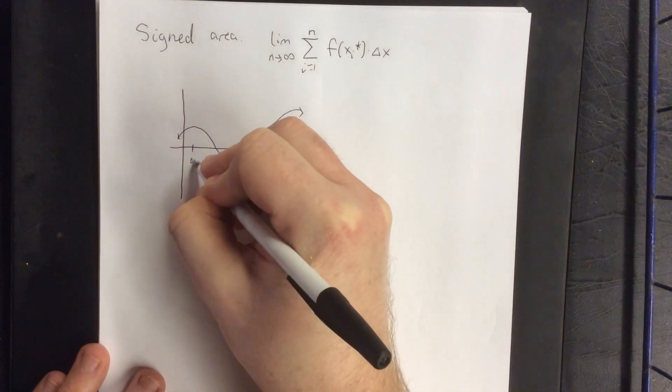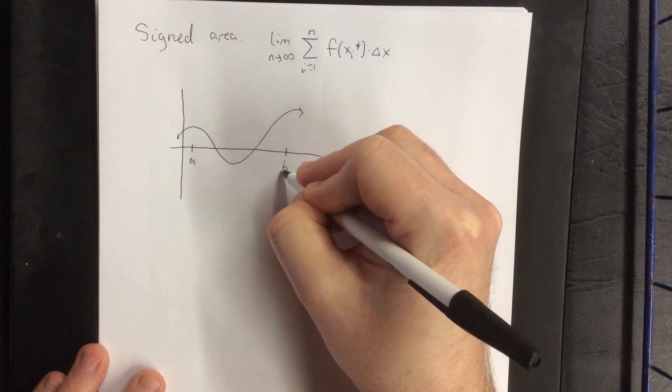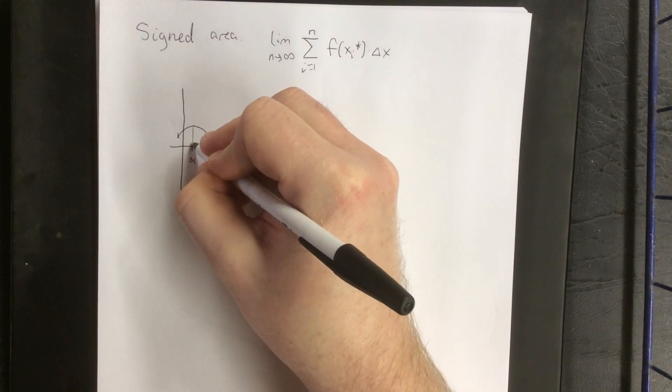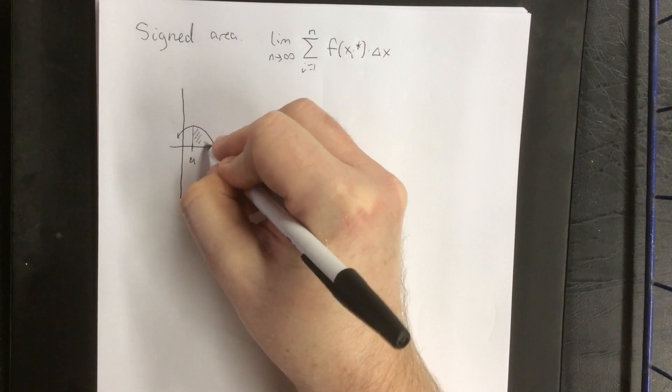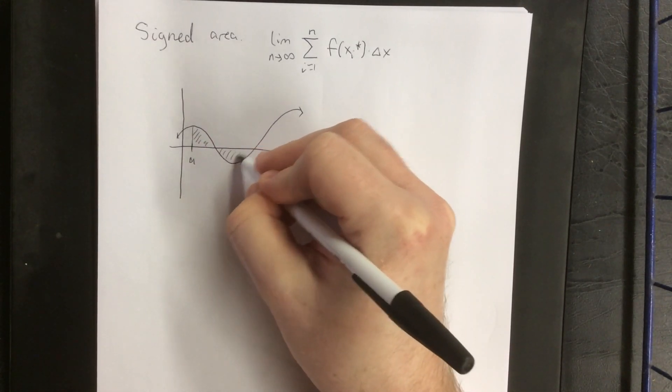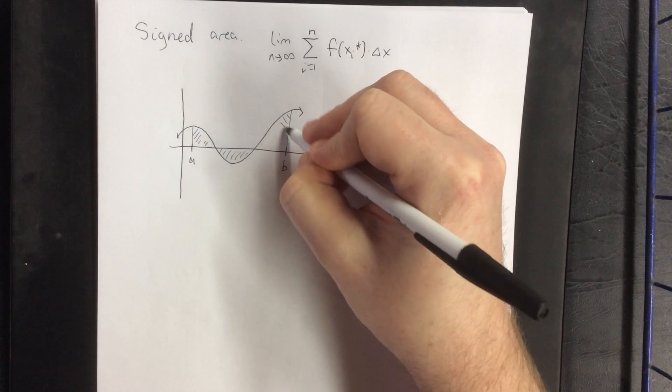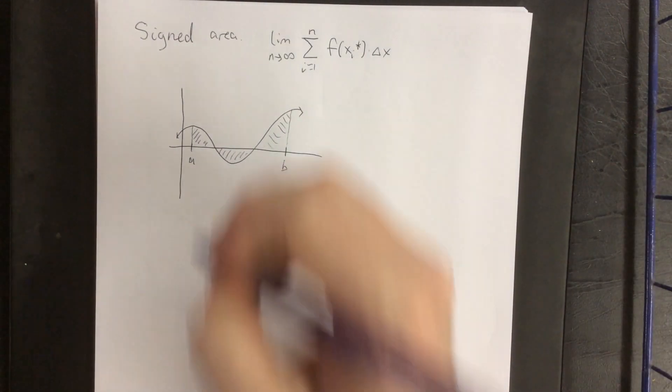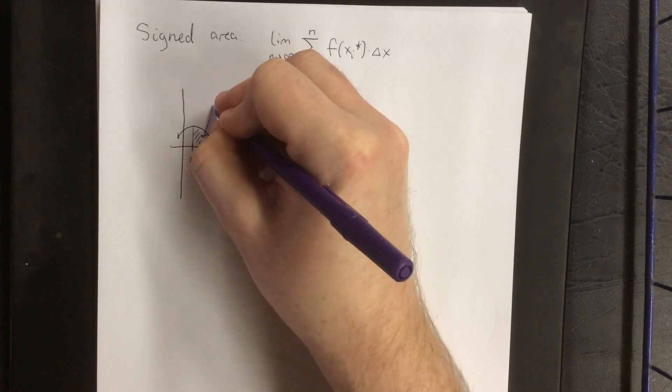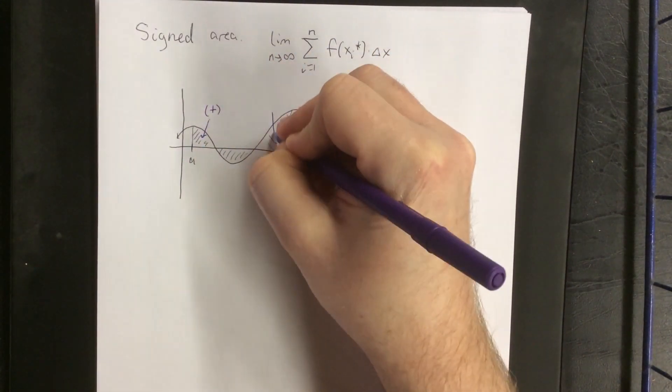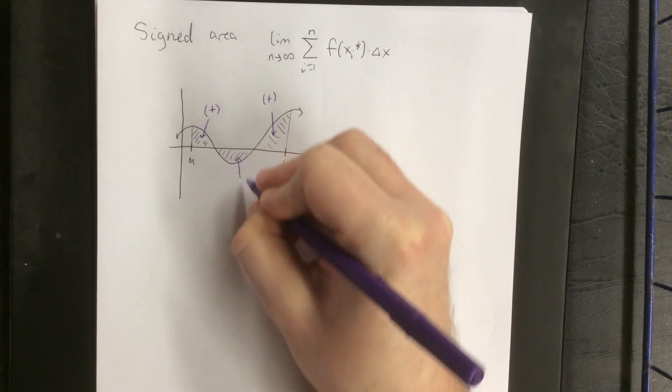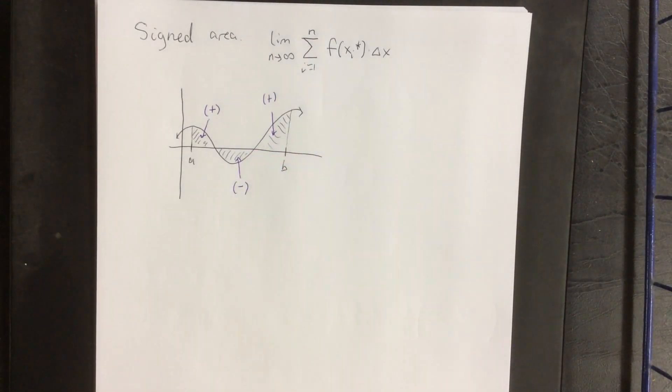For example, if I wanted to find the definite integral from a to b, we see that a portion of the area here is above the x-axis, a portion is below the x-axis, and then the last portion is above the x-axis. Signed area says that area is going to be positive as long as the function is above the x-axis. However, if it's below the x-axis, that area is going to be accounted for in a negative fashion.